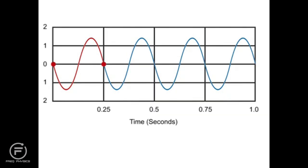In this example, the time it takes to complete one cycle is .25 seconds. So this waveform has a period of .25 seconds.